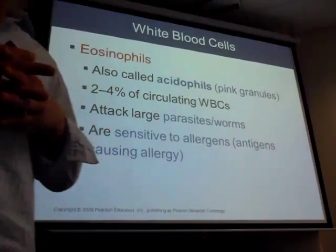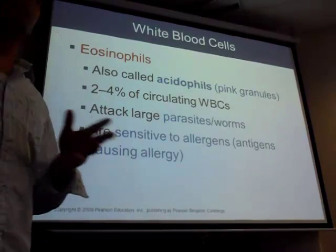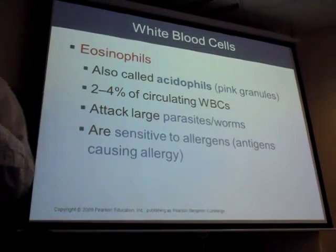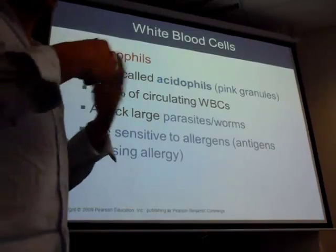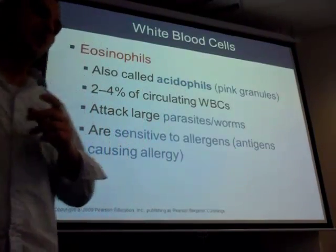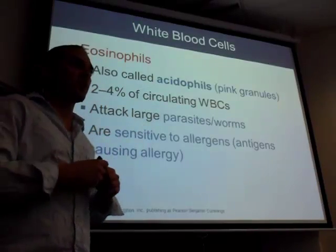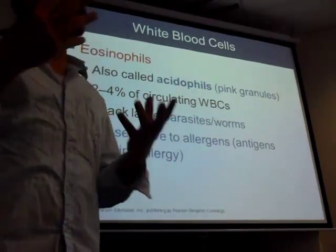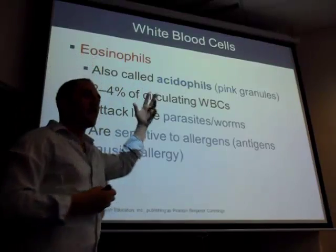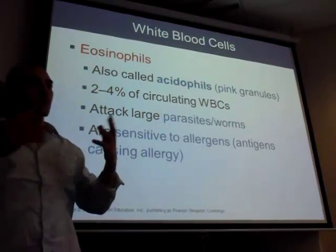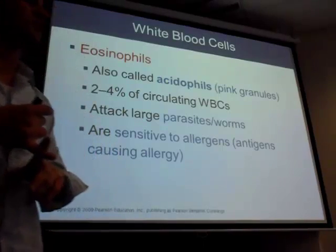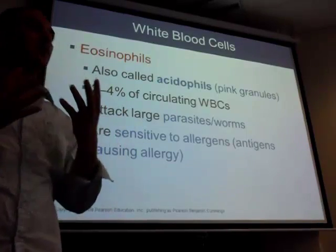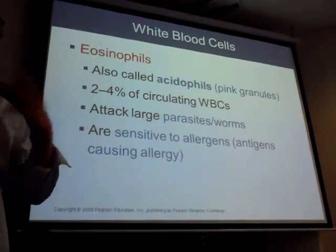Eosinophils — another name is acidophils. The opposite of an acid is a base, so you have acidophils and basophils. Neutral is between acid and base, hence neutrophils. When you stain blood, you apply an acidic stain then a basic stain. If a cell picks up the acidic stain, it's an eosinophil; if it picks up the basic stain, it's a basophil; if both equally, it's a neutrophil.